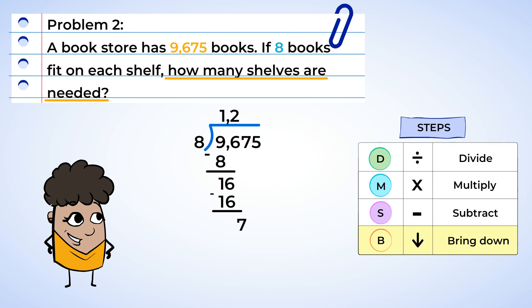Bring the 7 tens down. 7 is less than 8. Tricky moment here. Don't forget the 0 in the answer and bring the 1s down. Now you need to divide 75 by 8. The closest number to 75 that will do the job here is 72 because 9 times 8 is 72. Write down 9 in the answer. Multiply and subtract 75 minus 72 equals 3. And that was it. Here's the answer. 9,675 divided by 8 is 1,209 with a remainder of 3.